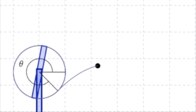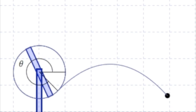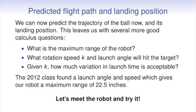Here we see an animation of the robot in action. It rotates at a fixed speed and releases the ball at the correct angle. The ball flies through the air and lands. This leaves us with several good questions: What's the maximum range? What rotation speed and launch angle will hit the target? And given rotation speed k, how much variation in launch time is acceptable?